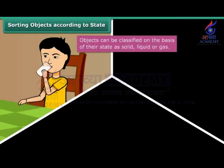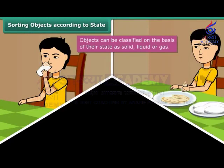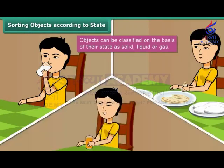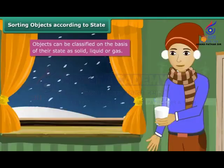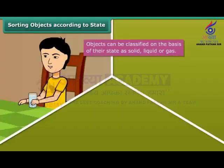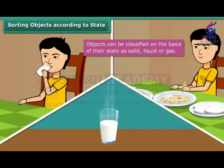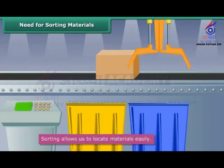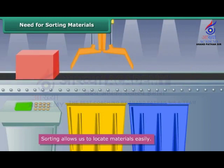The water you drink to quench your thirst is liquid, whereas the food you eat is solid. The chilled juice you relish in summers is liquid, whereas the glass container you have it from is solid. The steaming hot milk you enjoy in winters is liquid, whereas the steam coming out of the milk is a gas. Thus, all the objects that we see around us or use in our daily life can be classified into one of three categories: solid, liquid, and gas.